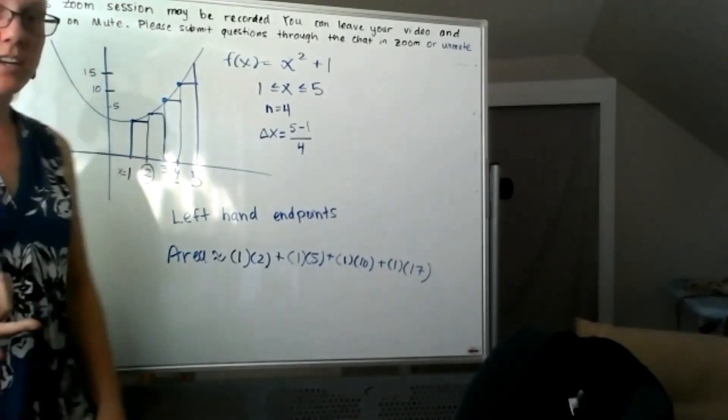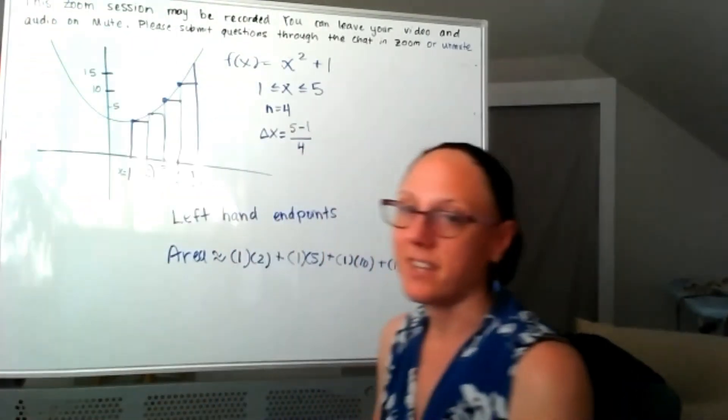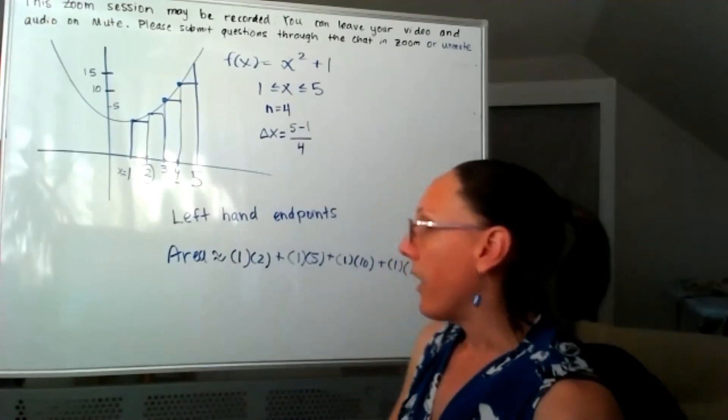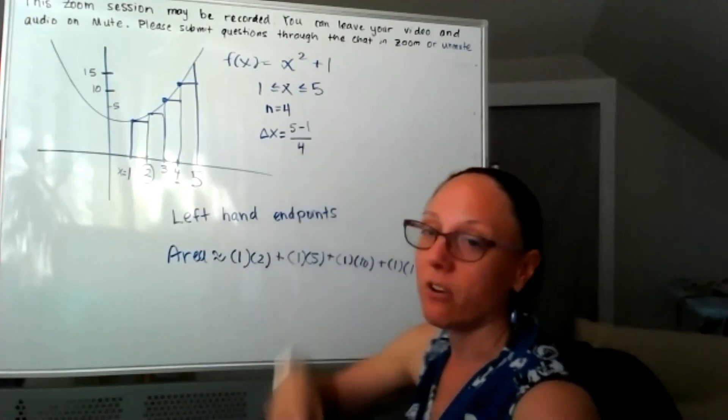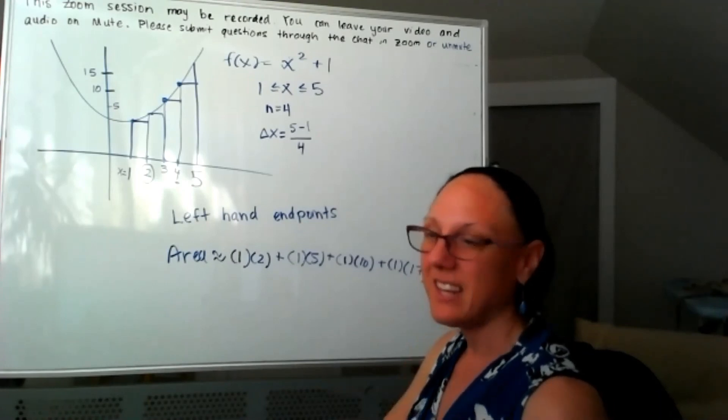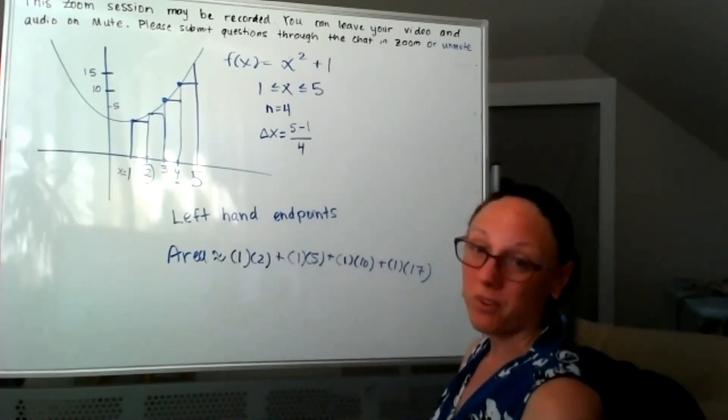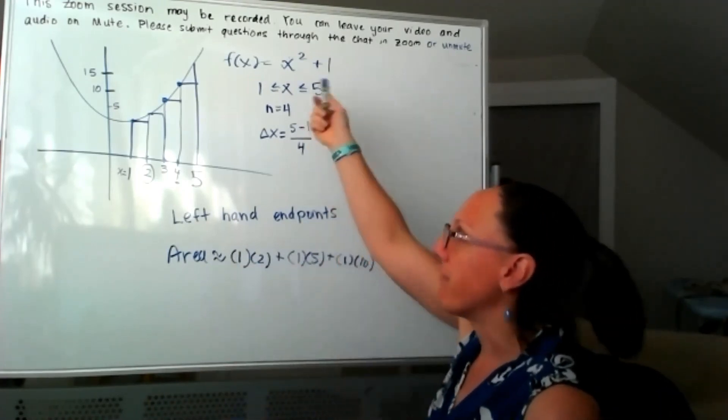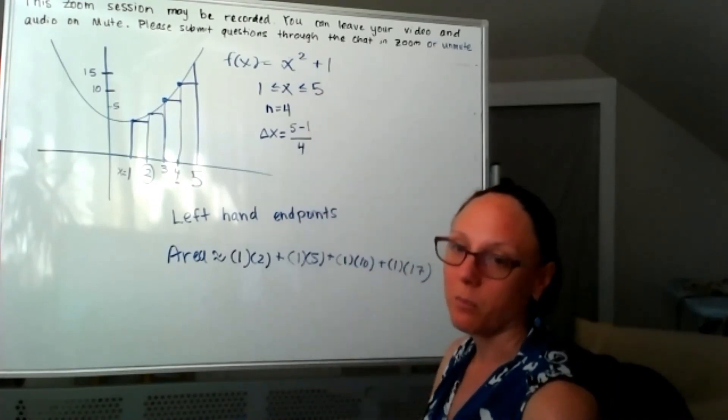Okay, so two things really can make these messier. One is if the interval that you break it up into means that you're dealing with fractions, then just that makes all of the numbers messier. Or if the function itself is messy to plug numbers into.